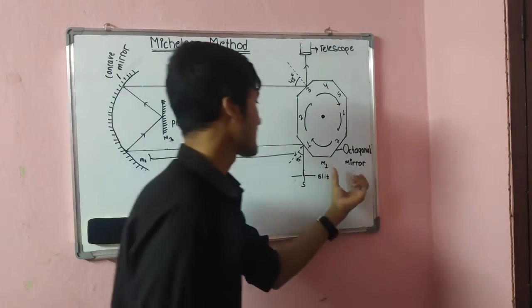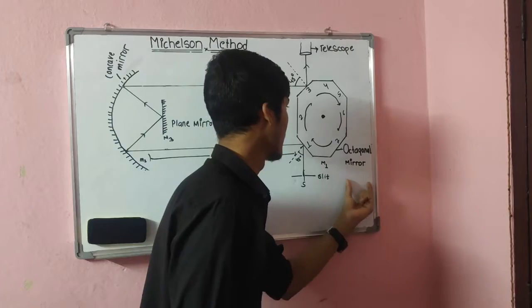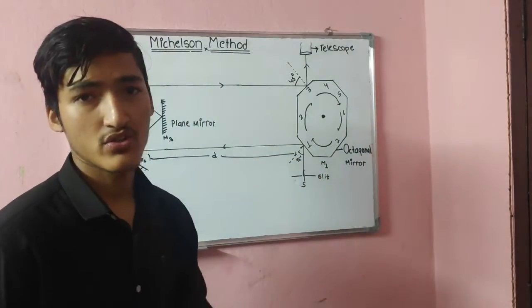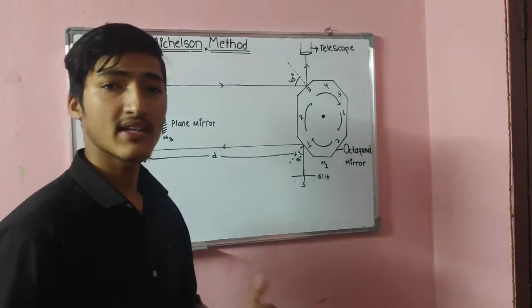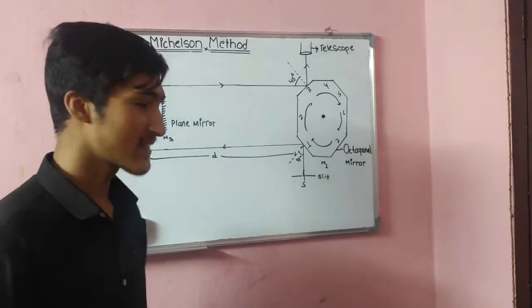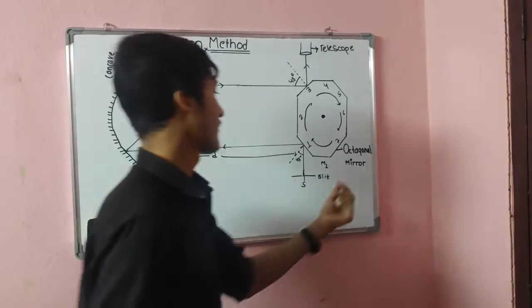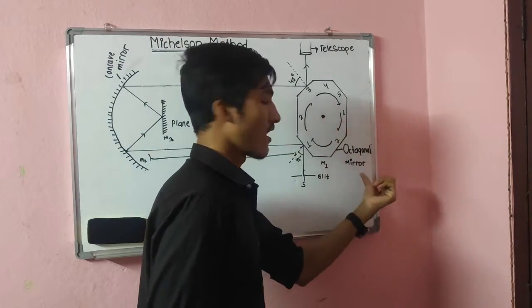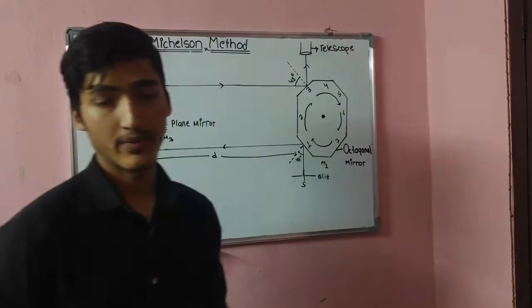Michelson connected this octagonal mirror with an electric motor so that rotation can be produced across an axis that passes through the center of the octagonal mirror.